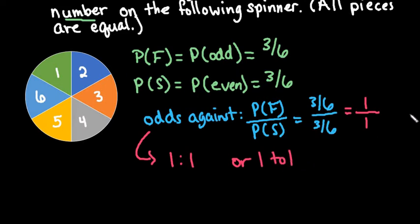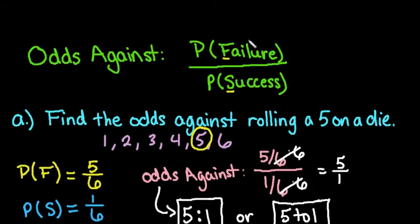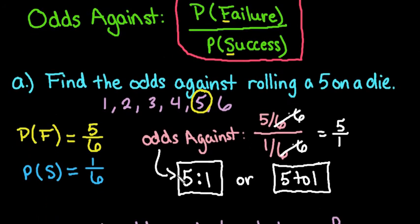To recap, anytime it says odds against, use this formula: probability of failure divided by probability of success. It's easiest not to reduce the probabilities beforehand to keep the denominators the same. If you reduce and they don't both reduce, it makes it more complicated to simplify. There are different ways to write your answers: 5:1 or 5 to 1. Thanks for watching! If you have questions or need other topics covered, please let me know.